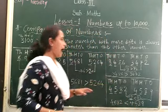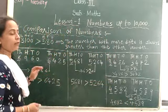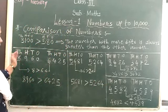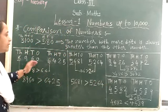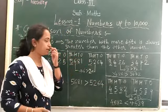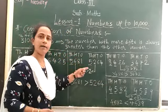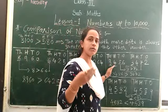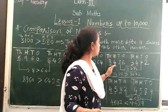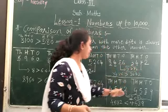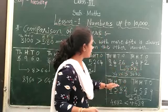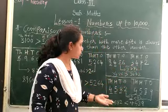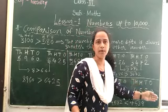I think this topic is clear for all of you. First compare the 1,000s place. If the 1,000s place is the same, compare the 100s place. If both those places are the same, compare the 10s place. And if those are also the same, compare the 1s place.